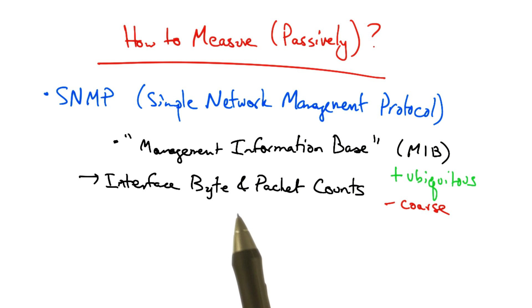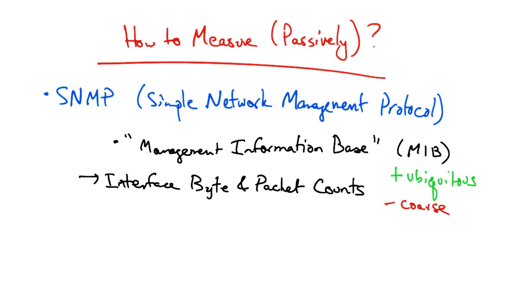It's coarse in the sense that because we're just polling byte or packet counts on the interface, we can't ask specific questions, such as how much traffic has been sent by a particular host or by a particular flow.